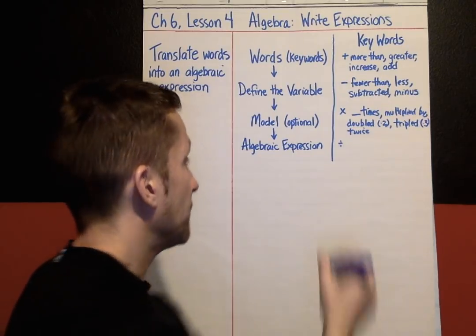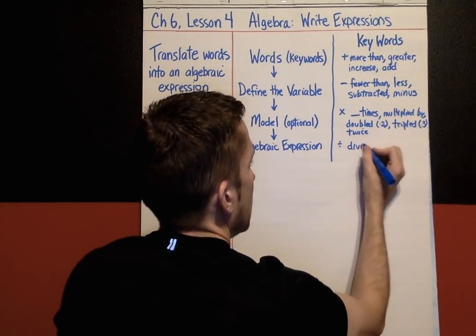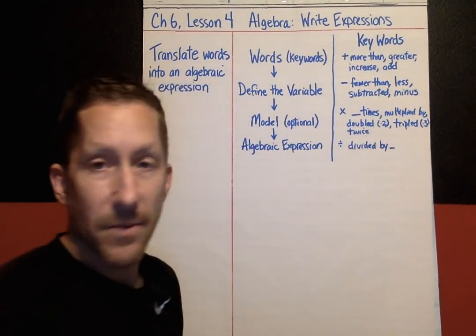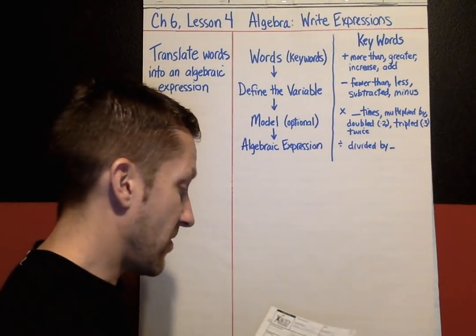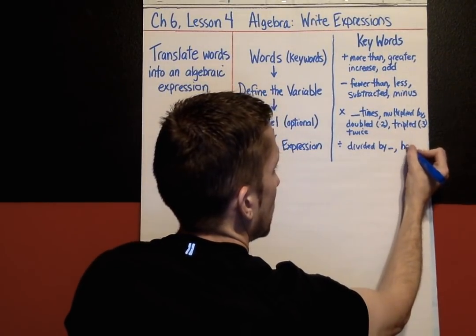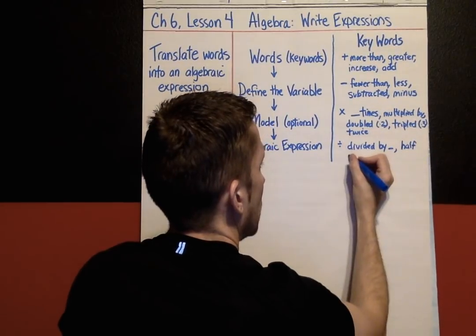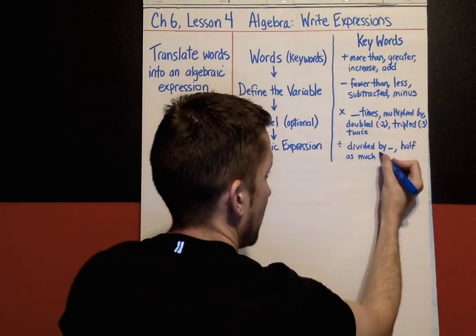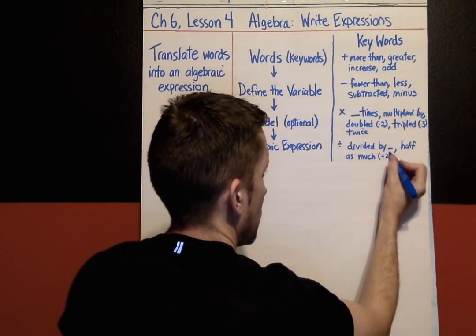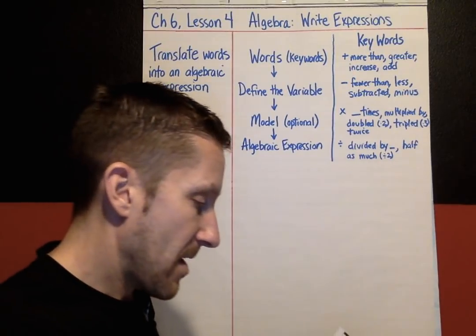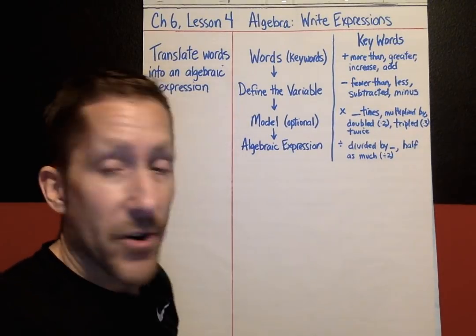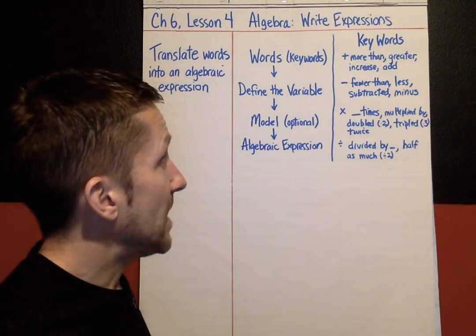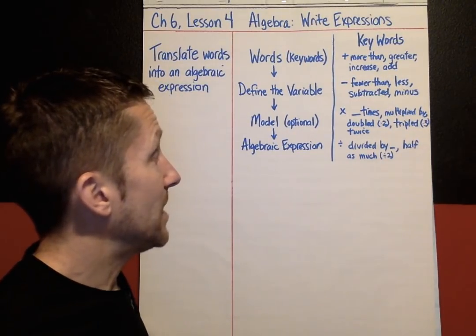These words indicate dividing: 'divided by' a number — like divided by three, divided by four, whatever the number is — 'half as much,' where half means dividing by two, and 'a third of,' which means dividing by three. There are other keywords not on this list, but this is a very good start.